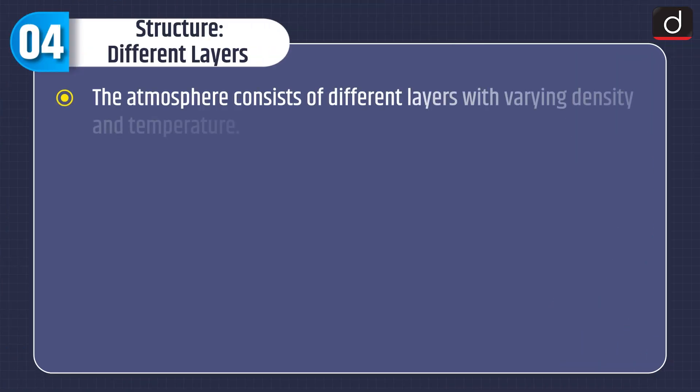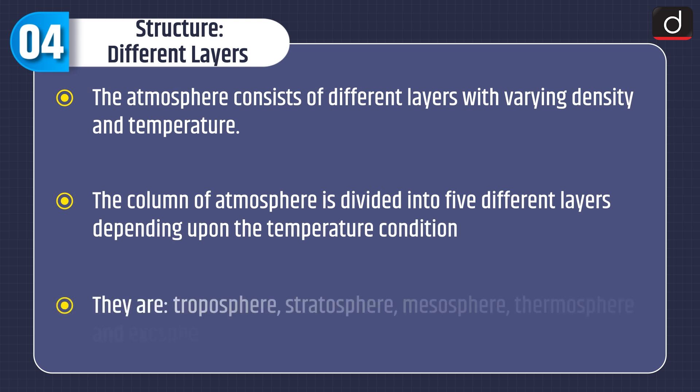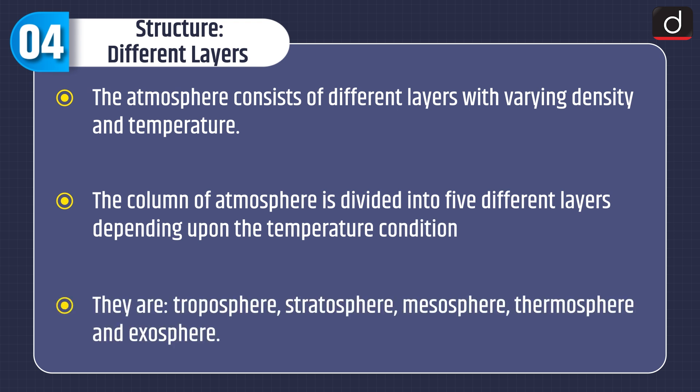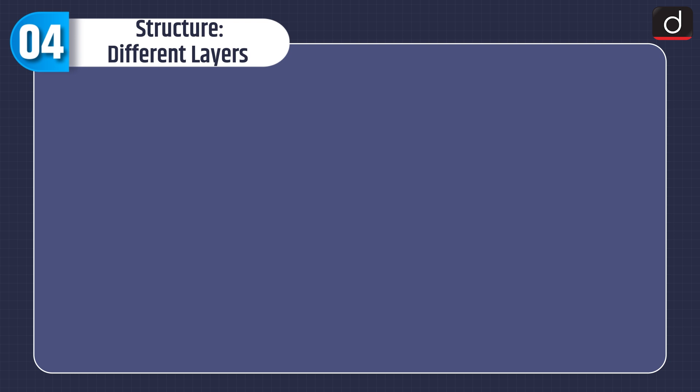Now let's have a look at the structure and different layers of the atmosphere. The atmosphere consists of different layers with varying density and temperature. The column of atmosphere is divided into 5 different layers depending upon the temperature condition. They are troposphere, stratosphere, mesosphere, thermosphere, and exosphere.